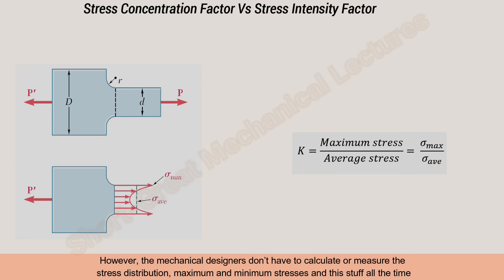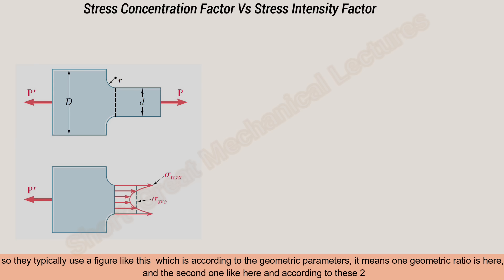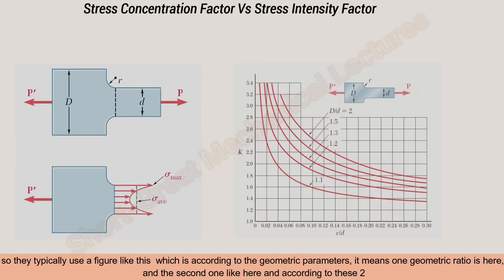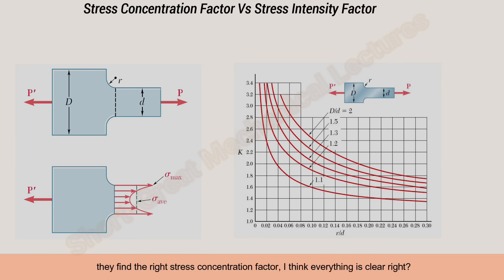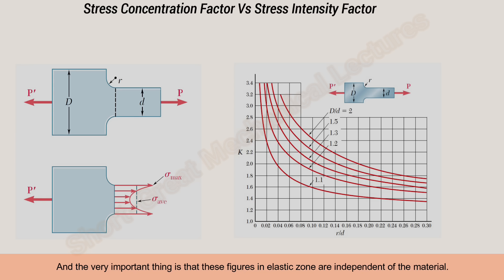Stress concentration factor is the ratio of the maximum stress over the average value. However, mechanical designers don't have to calculate or measure the stress distribution and find maximum and minimum stresses all the time. They typically use a figure like this, which is based on geometric parameters — one geometric ratio on one axis and a second one on the other — and from those two they find the correct stress concentration factor. A very important point is that these figures in the elastic zone are independent of the material.